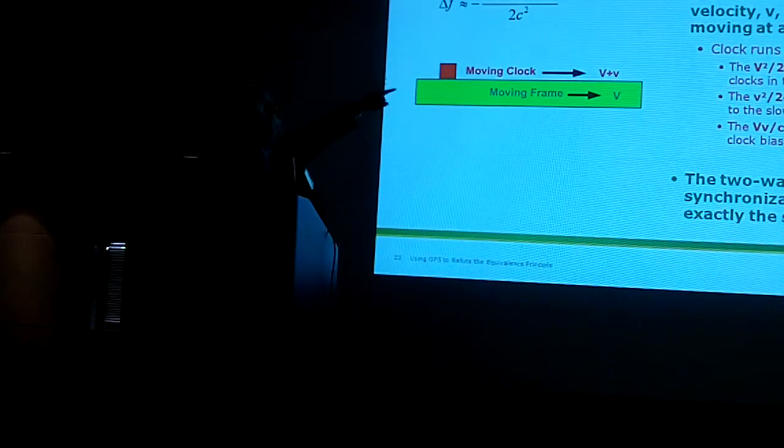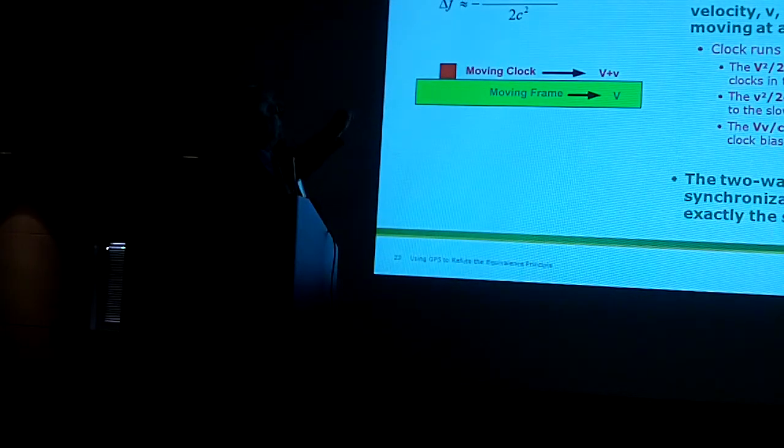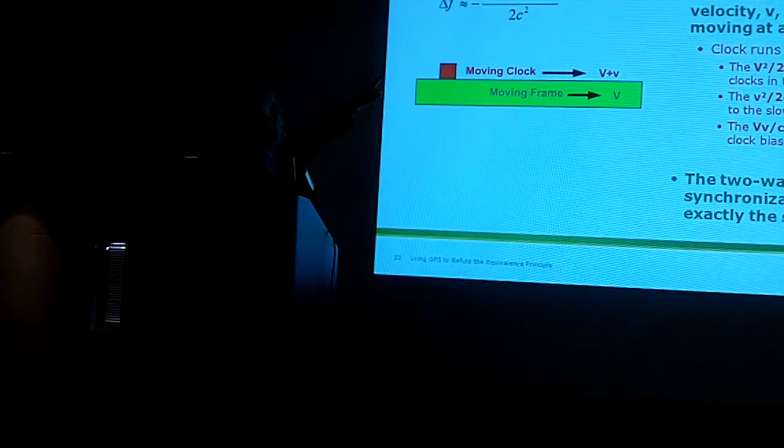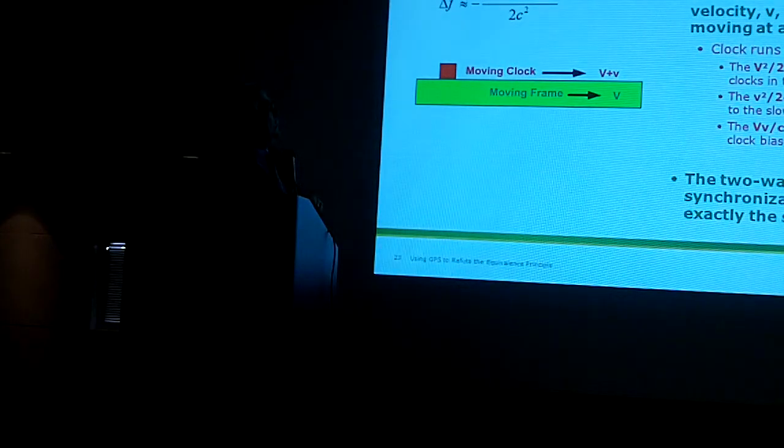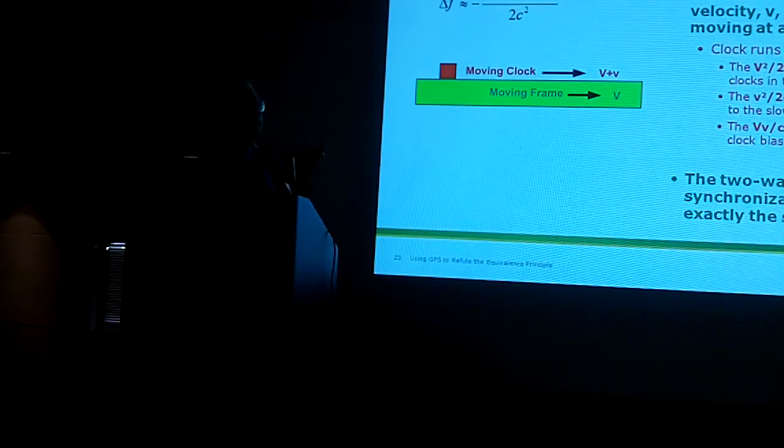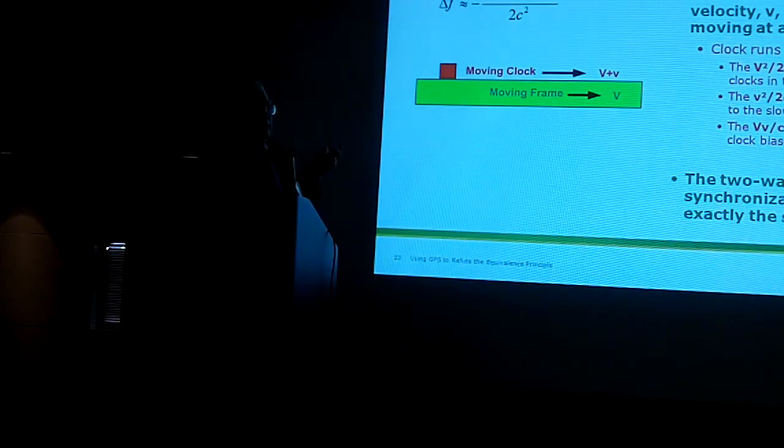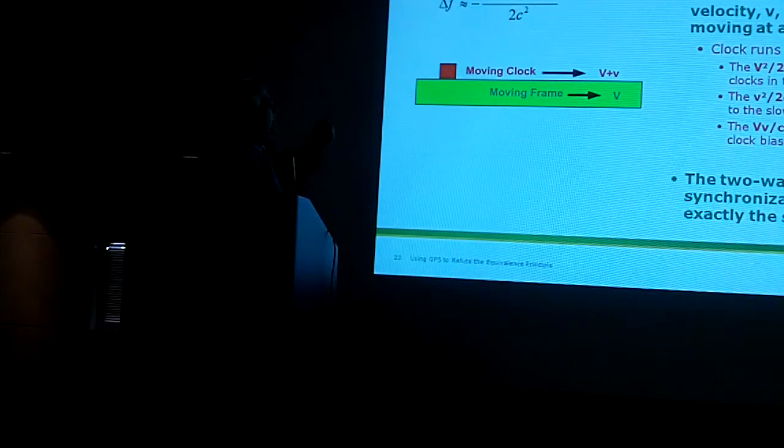What is really critical is this. The two terms on the end, when you square that V plus V, the V squared and the small V squared, are easy to explain.